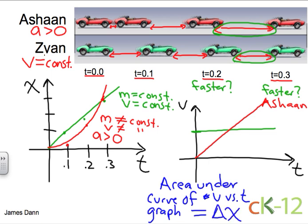And since they end at the same point, the displacement of Ashaan has to equal the displacement of Zion.